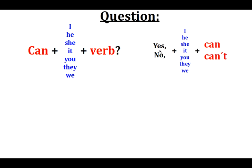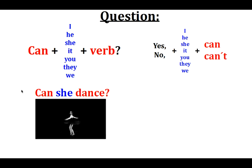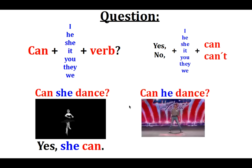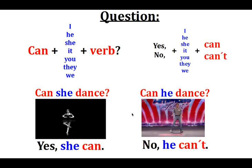For the answer, we say yes or no, the subject, and can for positive or can't for negative. For example: Can she dance? Yes, she can. Can he dance? No, he can't. The question, yes and no, and the short answer with can.